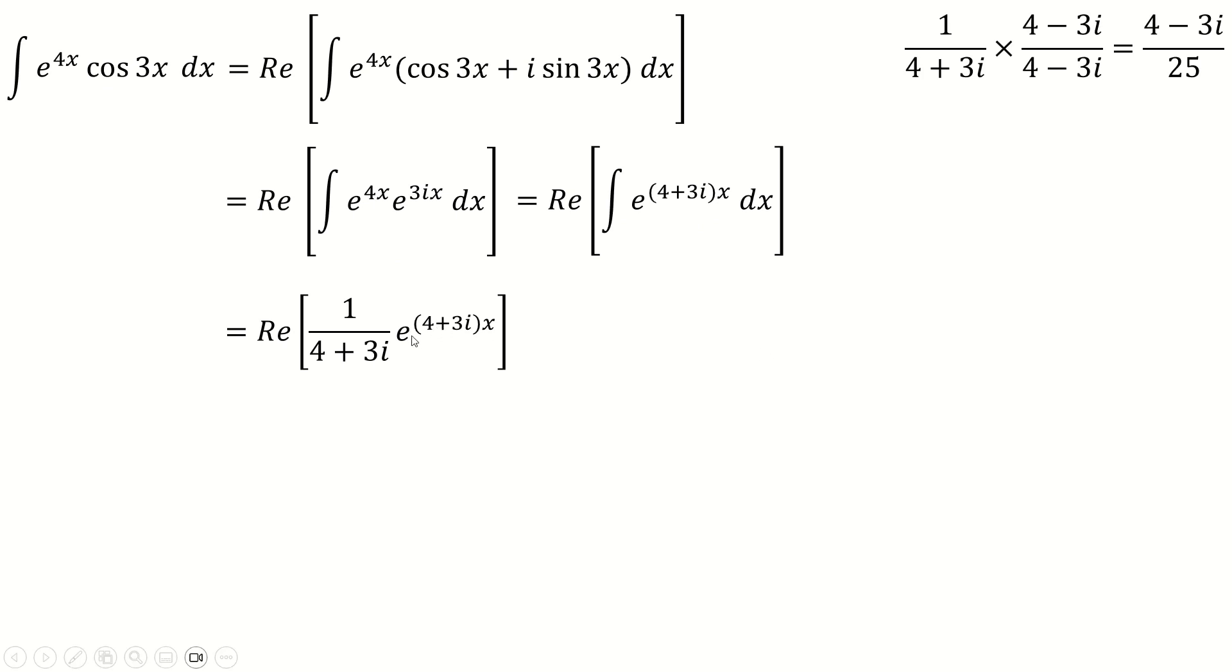Decouple these two things to make e to the 4x times e to the 3ix again. 1 over 25 at the front times e to the 4x, and then brackets 4 minus 3i into, put this back into cos 3x plus i sine 3x.